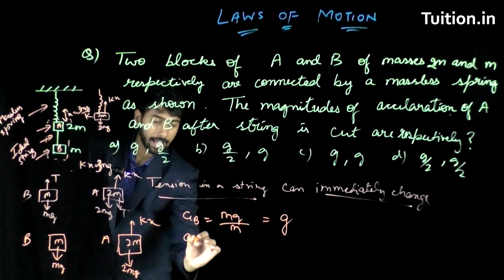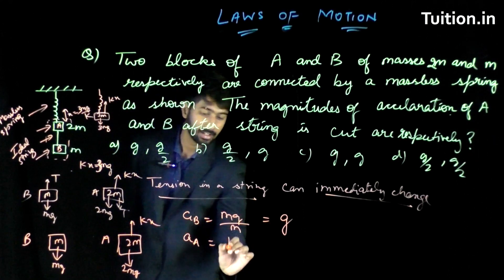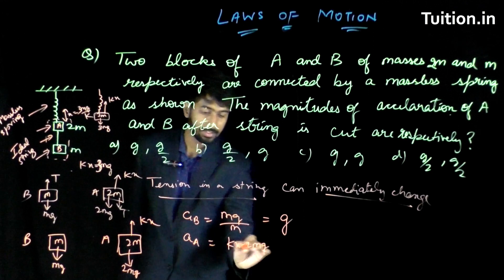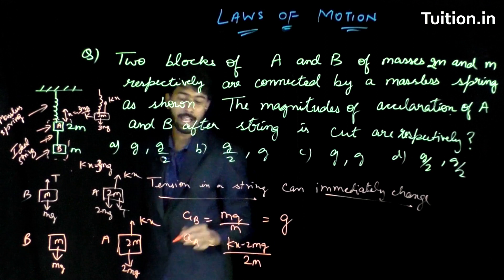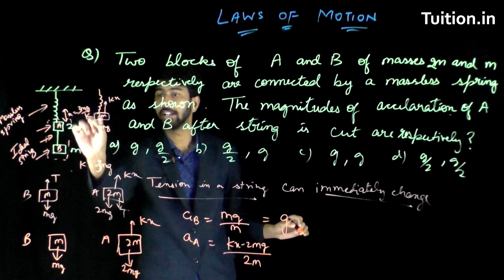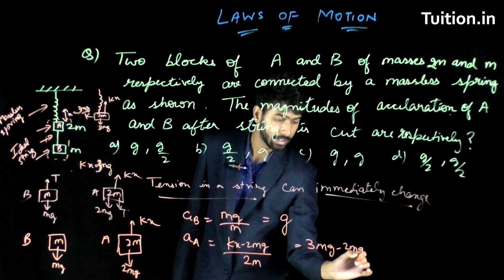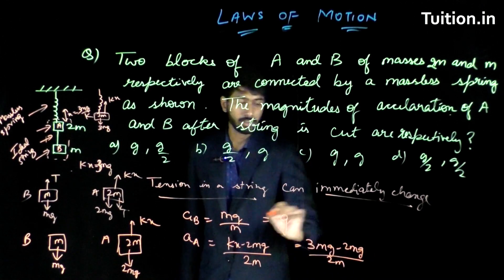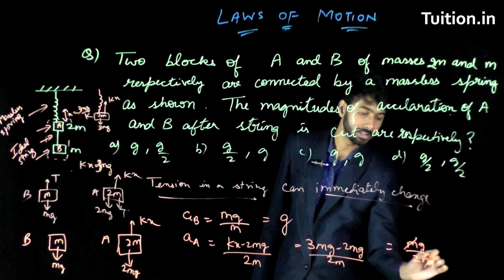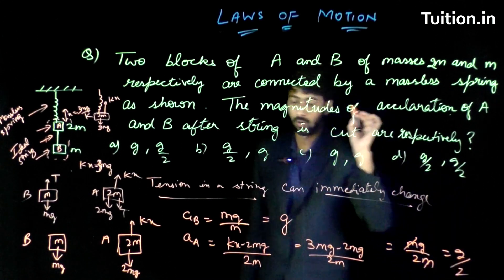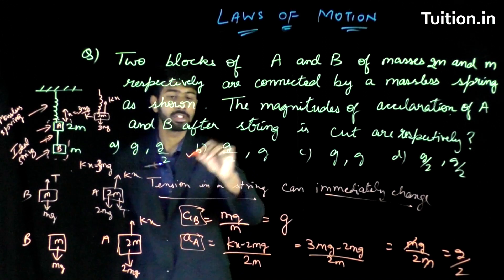How about acceleration of A? Acceleration of A, the force that is acting on A is nothing but kx minus 2mg. kx minus 2mg divided by mass of A. Mass of A is nothing but 2m is your acceleration of A. What is kx? We have already found that out, it's 3mg. So it is 3mg minus 2mg by 2m is what you have. 3mg minus 2mg is nothing but mg by 2m is what you have. So m gets cancelled and acceleration of A is now g by 2. So g by 2 is acceleration of A, g is acceleration of B. So g by 2, g should be the answer.